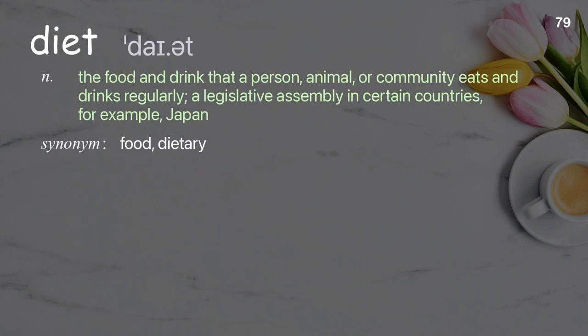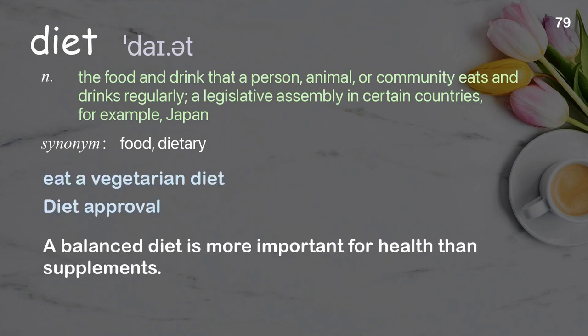Diet: the food and drink that a person, animal, or community eats and drinks regularly; also a legislative assembly in certain countries, for example Japan. Examples: eat a vegetarian diet, diet approval. A balanced diet is more important for health than supplements.